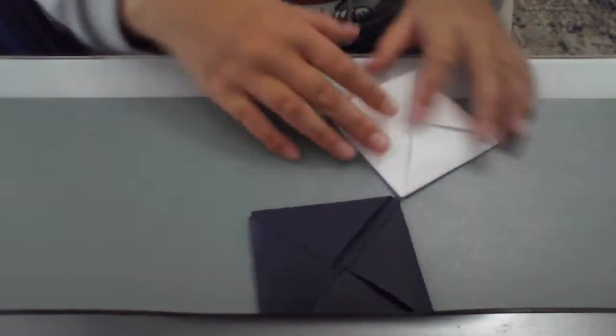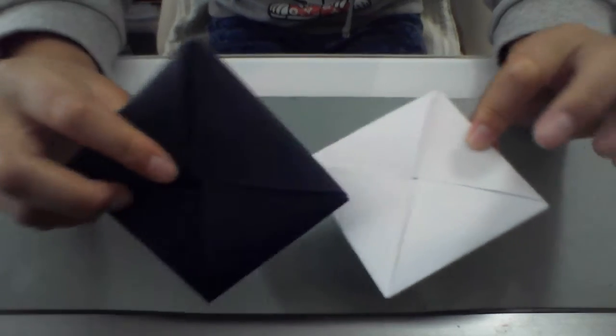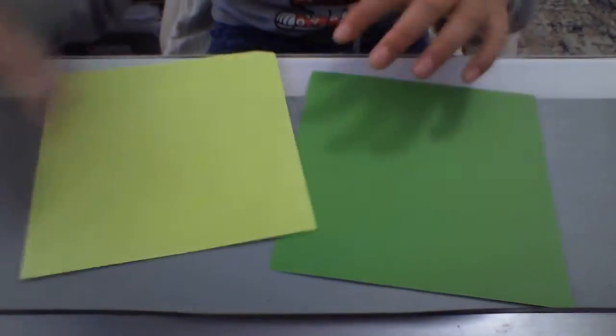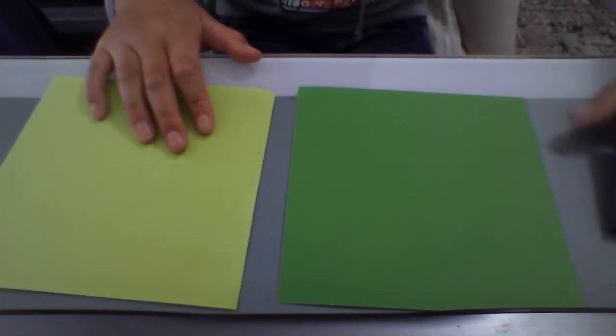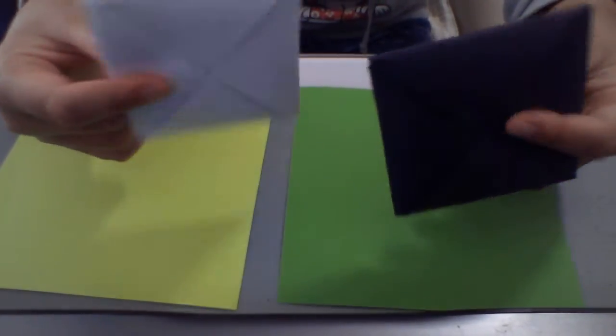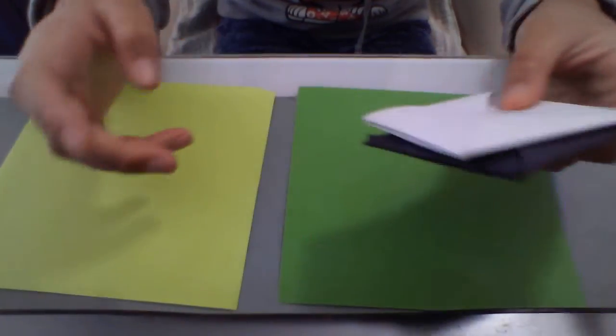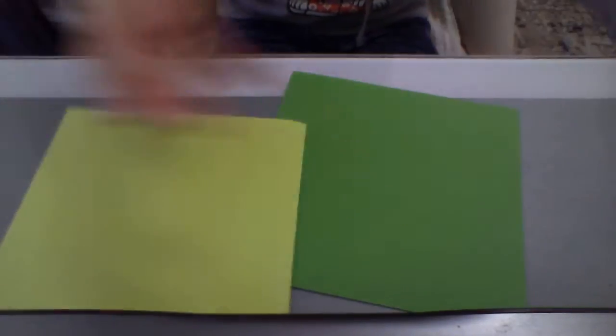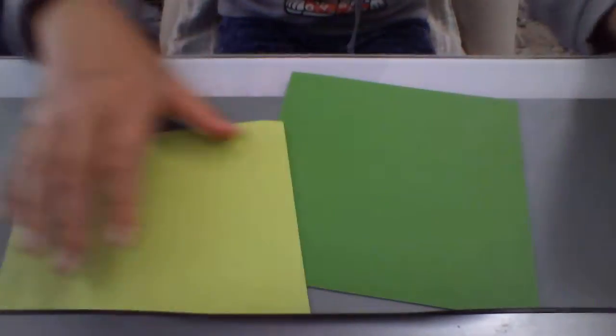So, today we're going to be needing two sheets of square paper. Preferably printer paper, one paper for each Daichi.